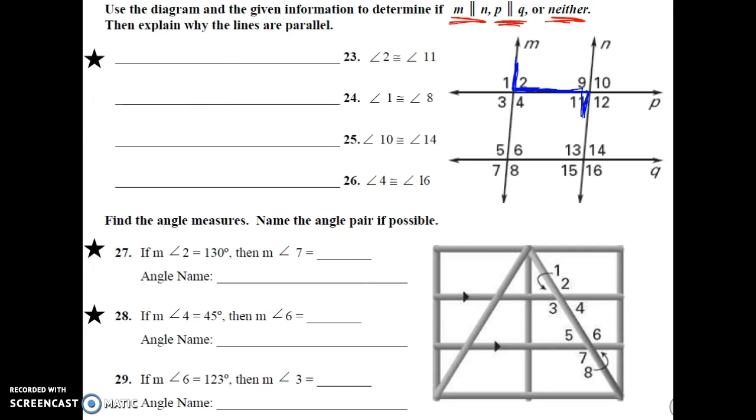Identifying the one line that cuts through both of them. In this case, the transversal turns out to be P. And M and N would be the two parallel lines. So we're going to say that M is parallel to N because alternate interiors are equal.